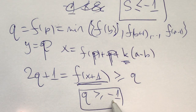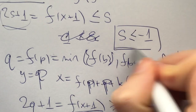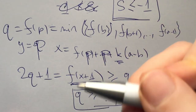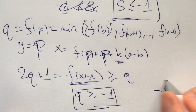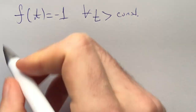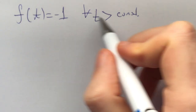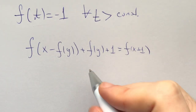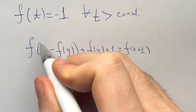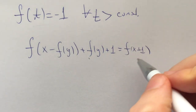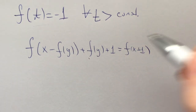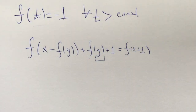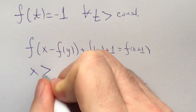Now the minimum value is greater than or equal to negative 1, and the maximum is less than or equal to negative 1, which means there is only one value here: negative 1. This implies that f of t is equal to negative 1 for all t greater than some constant. Looking back at our functional equation, we can set two values to be as big as we want and let one be as small as we want by fixing y and picking x much larger.